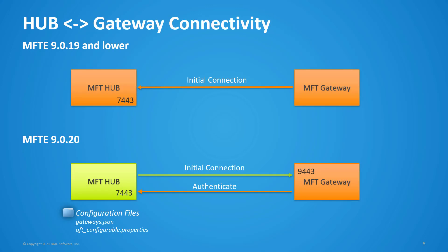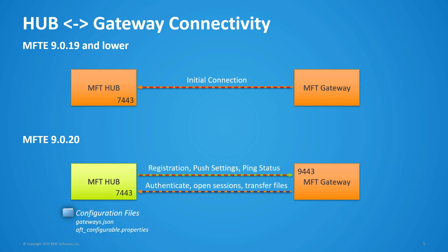Managed File Transfer Enterprise 920 has connectivity changes between hubs and gateways. On MFT 919 and lower, the direction of the initial connection is from the gateway to the hub. On MFT 920, the direction of the initial connection is inverted, to be from hub to gateway. The gateways start automatically after installation and wait for the hub nodes to register to them. The direction of external user-related sessions still remains from gateway to hub.